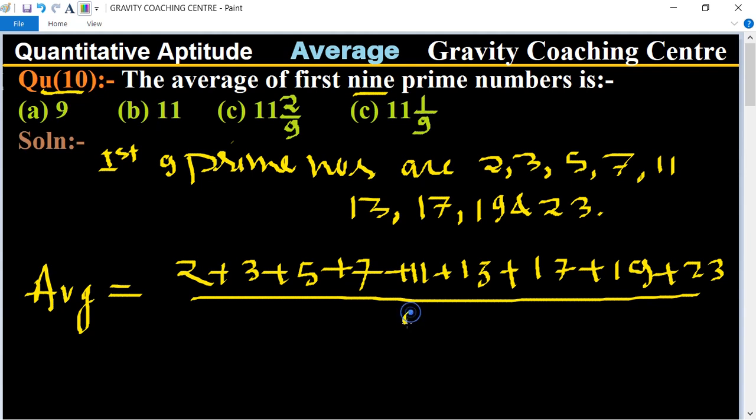Upon total number is 9, and the sum total equals 100 upon 9 equals, change into mixed fractions, so 11 whole number 1 upon 9 which is the required answer. So option c is the correct one.